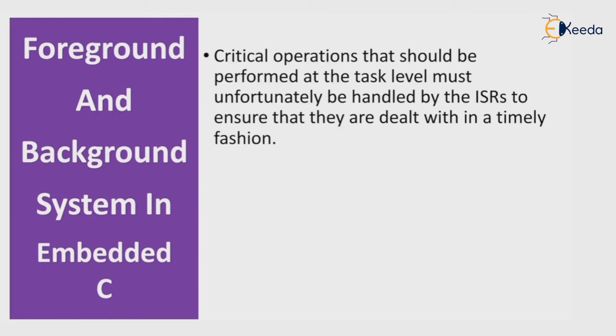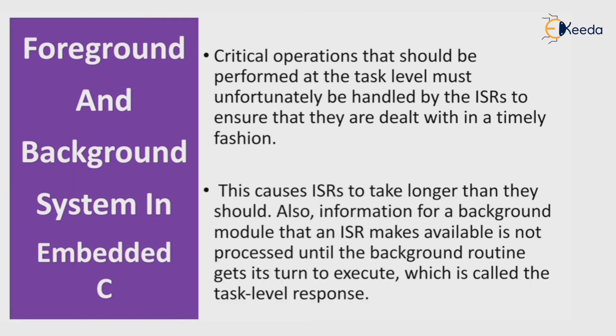A critical operation that should be performed at the task level must unfortunately be handled by the interrupt service routine to ensure that they are dealt with in a timely fashion. This causes interrupt service routines to take longer than they should. Also, information for a background module that an ISR makes available is not processed until the background routine gets its turn to execute, which is called the task level response.